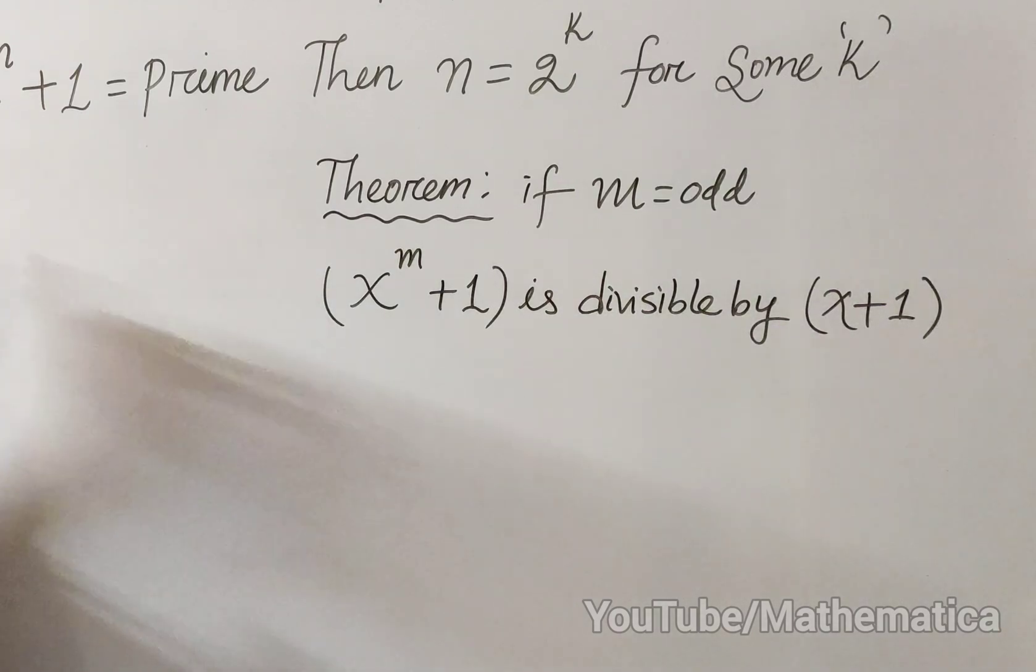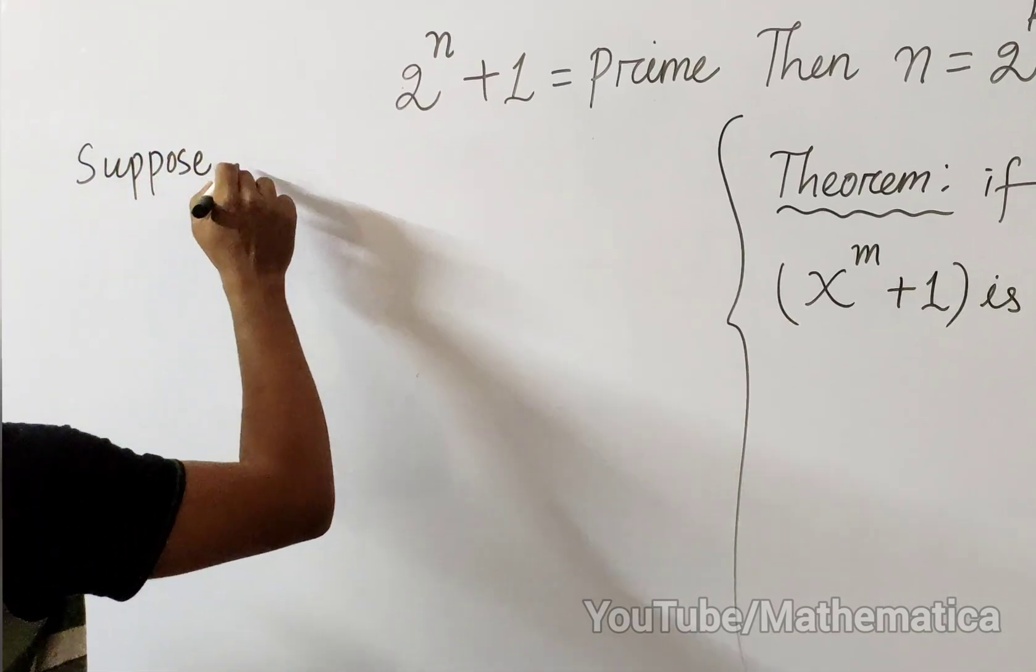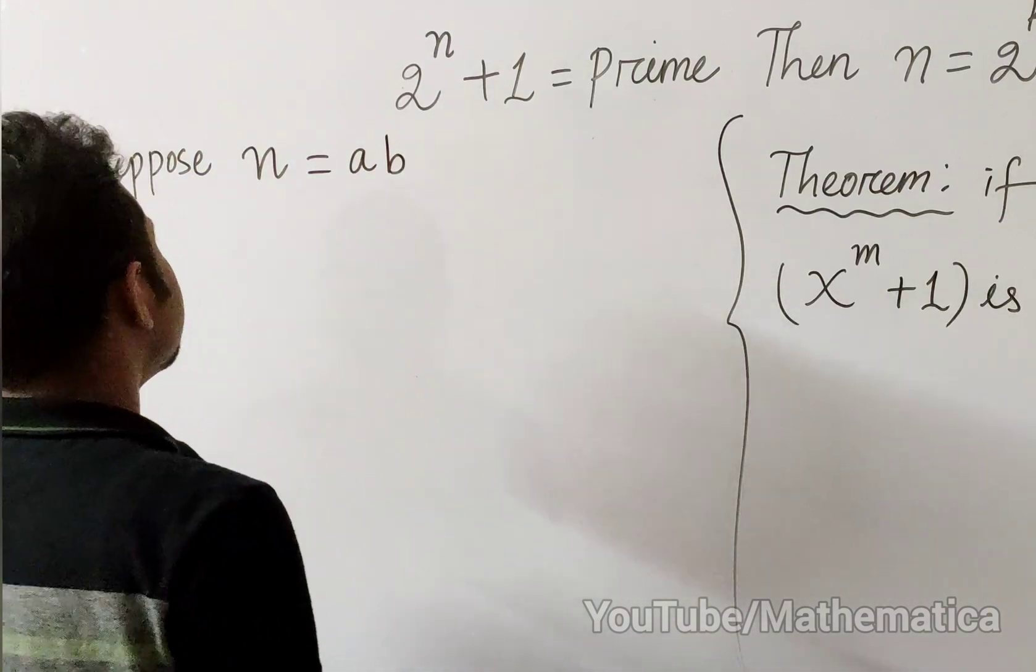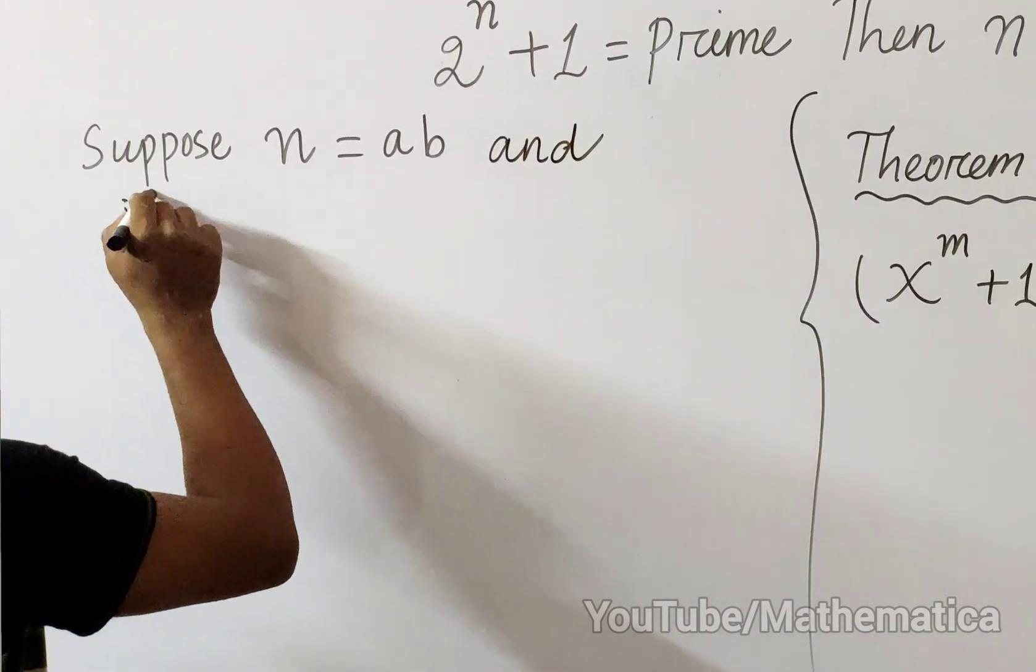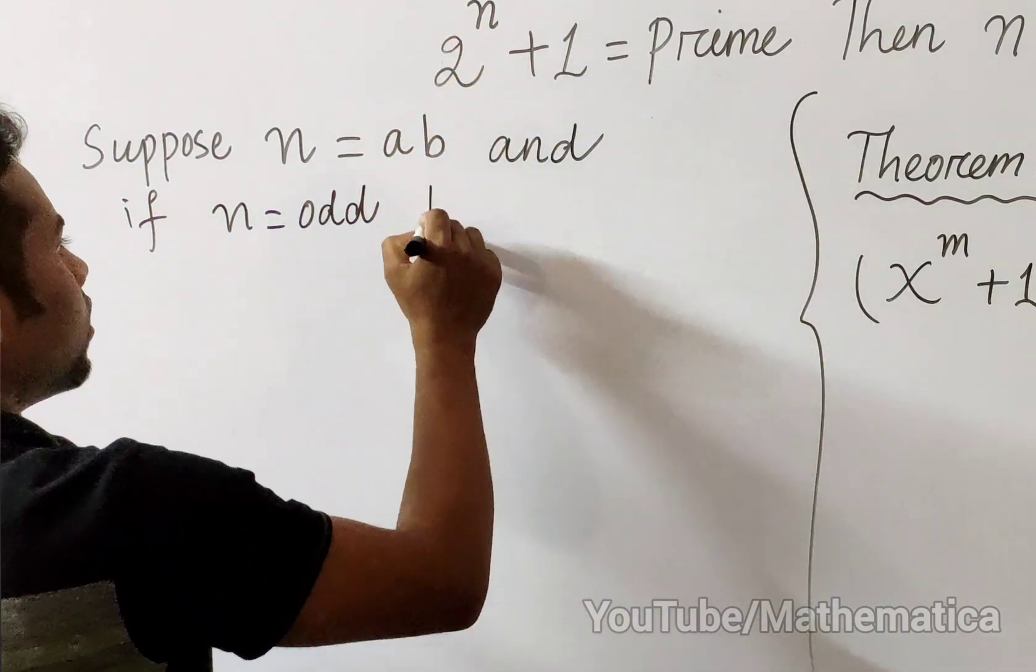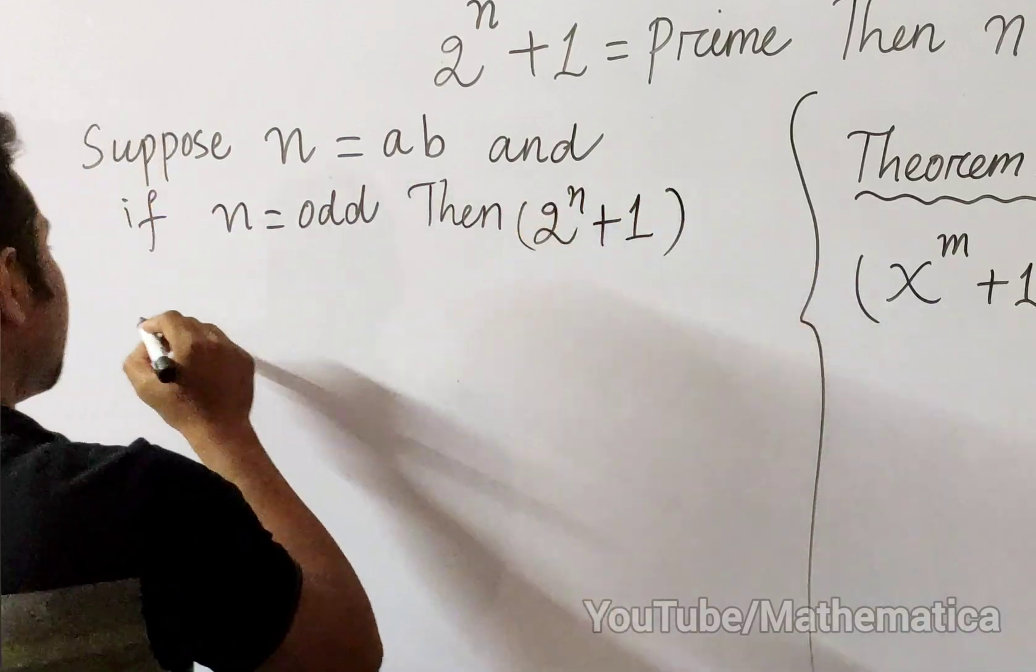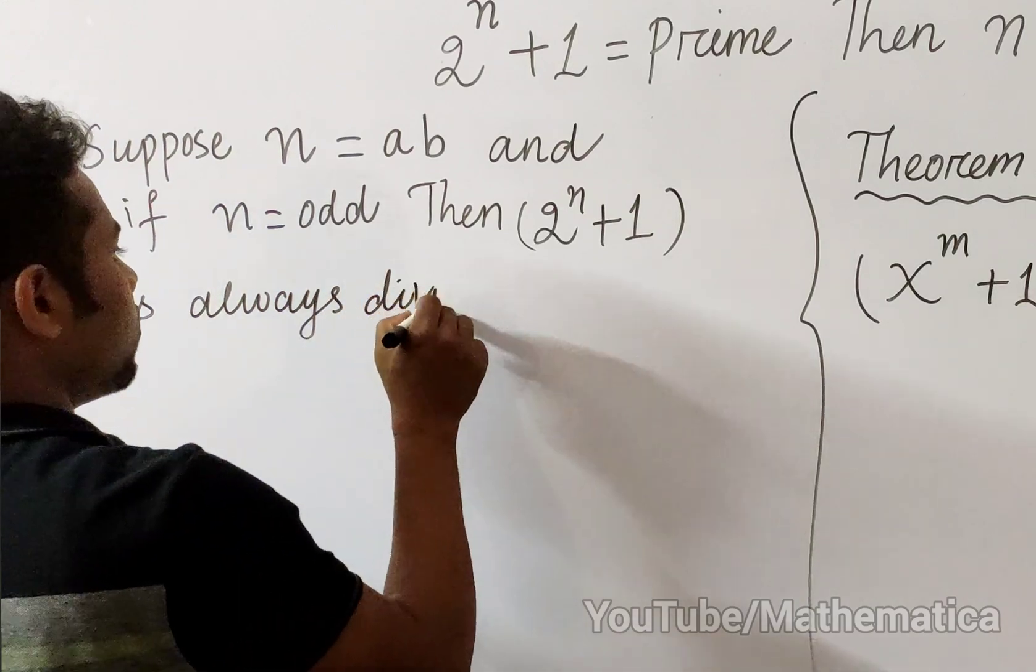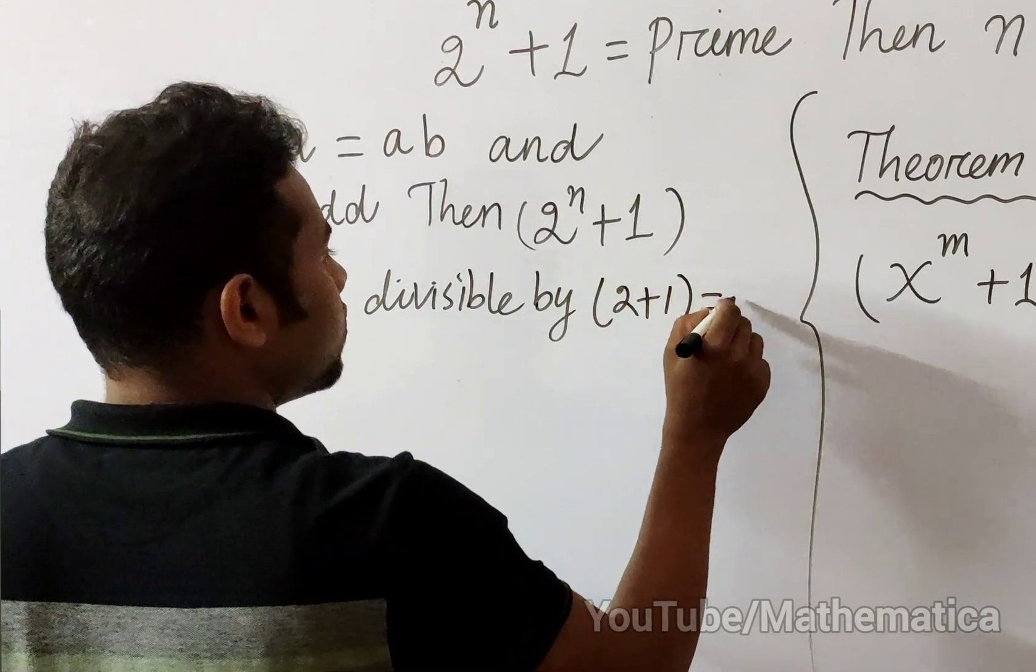Here, suppose n equals ab for some a and b. Then if n is odd, then 2^n + 1 is always divisible by 2 + 1, that is 3.